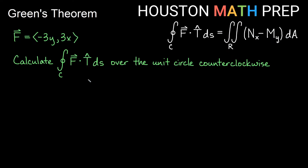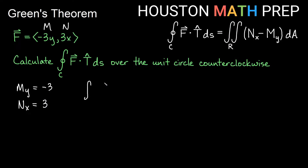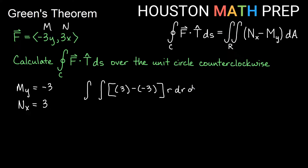Let's look at M and N first. If −3y is M and 3x is N, then partial M_y — the derivative of −3y with respect to y — gives me −3. And partial N_x — the partial derivative of 3x with respect to x — gives me 3. So we set up our integral as the double integral of N_x, which is 3, minus M_y, which is −3, times dA. Since it's a unit circle and a round region, I'll use polar: r dr dθ.